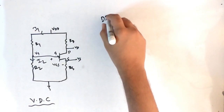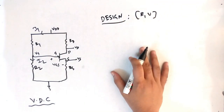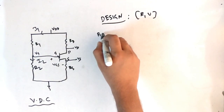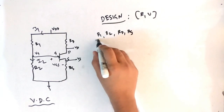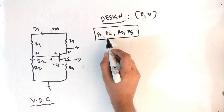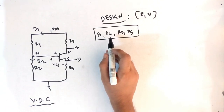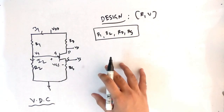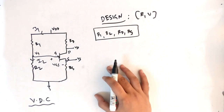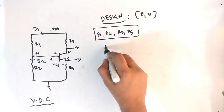Now we have to do the design step. Design means you have to find the resistances and the voltages. The resistances to find are R1, R2, RD, and RS. R1 and R2 are particularly interesting because in every question there is a unique way to find them. One way to find R1 and R2 is covered in this video. You can see that I1 is flowing through R1 and I2 is flowing through R2, so you can apply KCL.